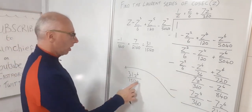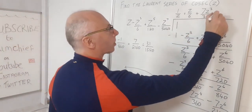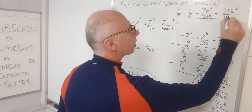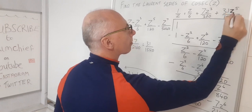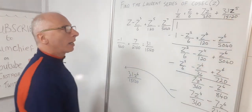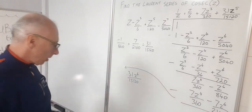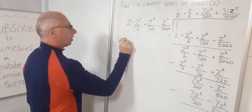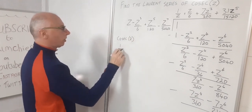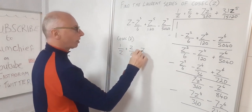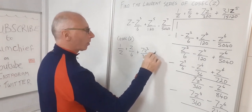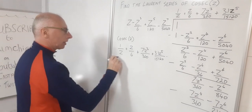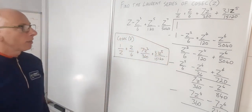So our Laurent series for cosecant of Z is: 1 over Z plus Z over 6 plus 7Z cubed over 360 plus 31Z to the 5 over 15,120, and you could go on and on. That is the Laurent series for the cosecant function.